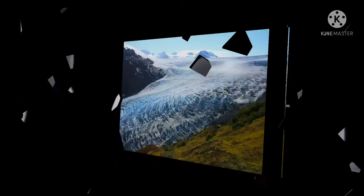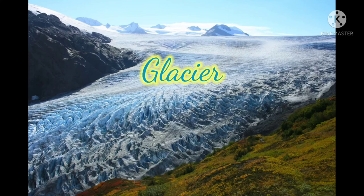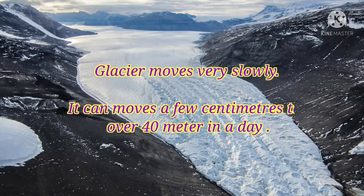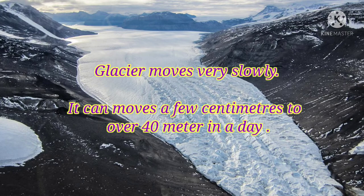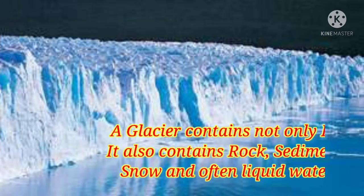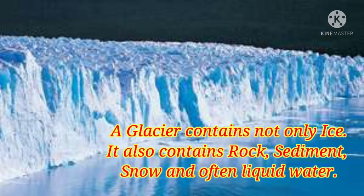A glacier is a huge mass of ice which moves downslope very slowly due to its own weight and gravity. A glacier moves only a few centimeters to over 40 meters per day. A glacier contains not only ice — it also contains snow, sediment, rock, and often liquid water.